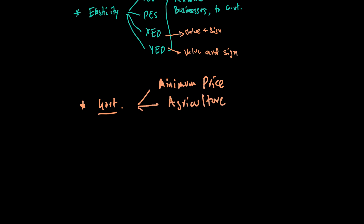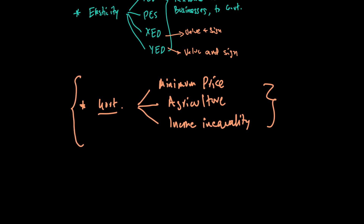They could mix a question related to income inequality, addressing it through transfer payments, and link that with minimum price and probably the agricultural market. This is one thing that hasn't been tested for a long time. They could also test your knowledge of subsidies, since subsidies has also not come recently — they may say minimum price, compare and contrast, look at the agriculture market, and give you a question using this combined knowledge.